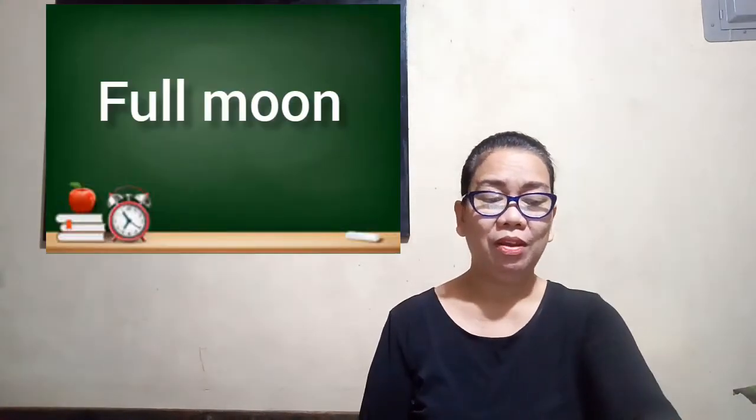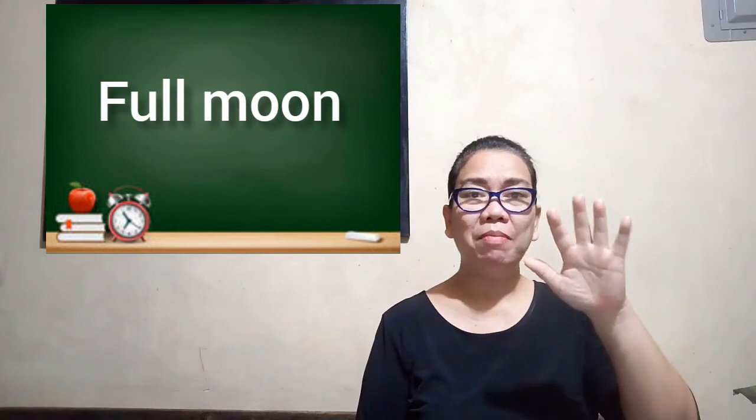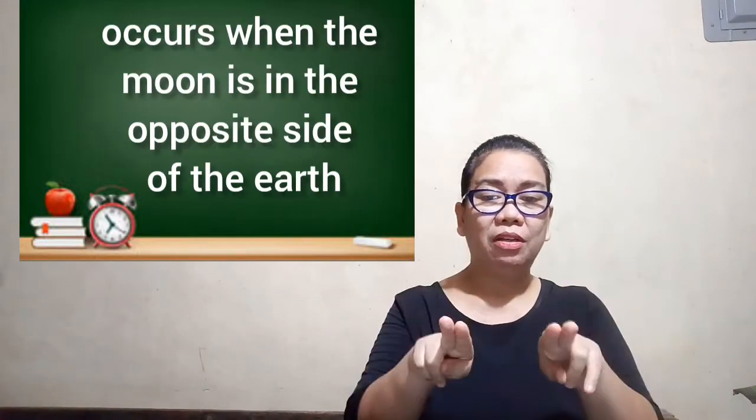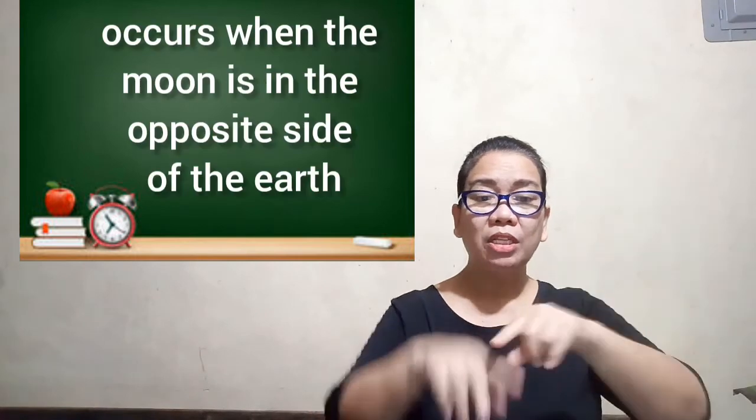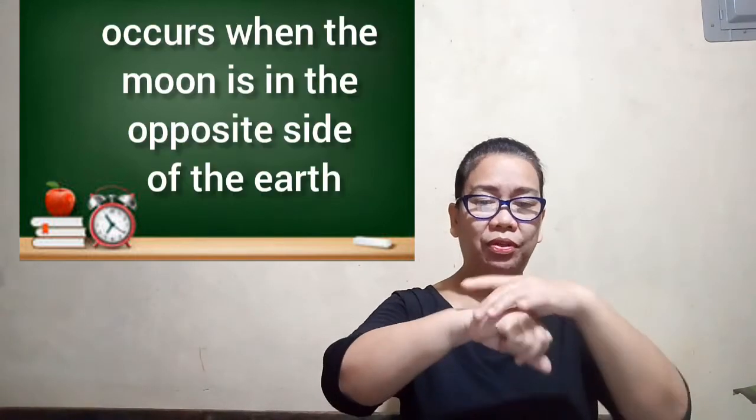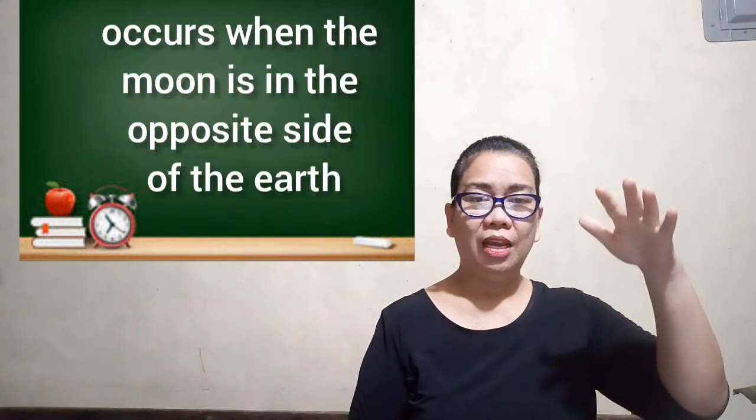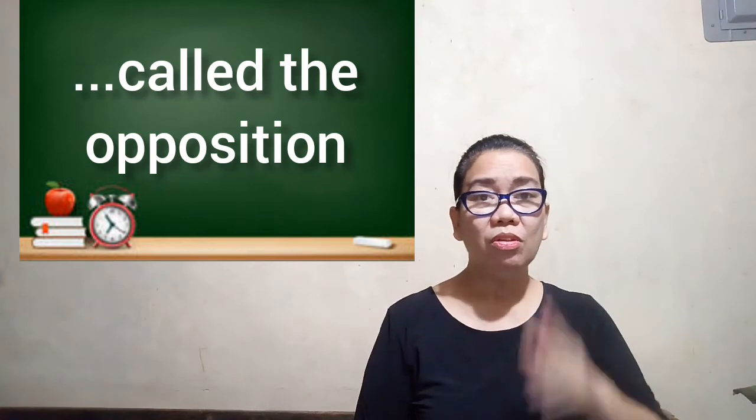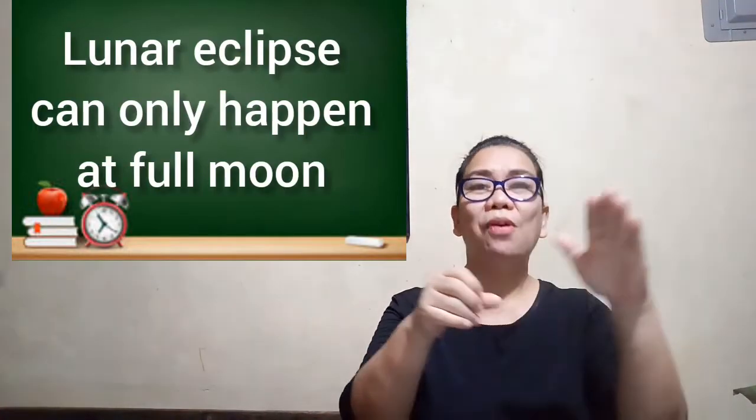Number five is the full moon. It is when we can see the entire lit portion of the moon. The full moon phase occurs when the moon is on the opposite side of the Earth from the sun. It is called opposition. A lunar eclipse can only happen at full moon.